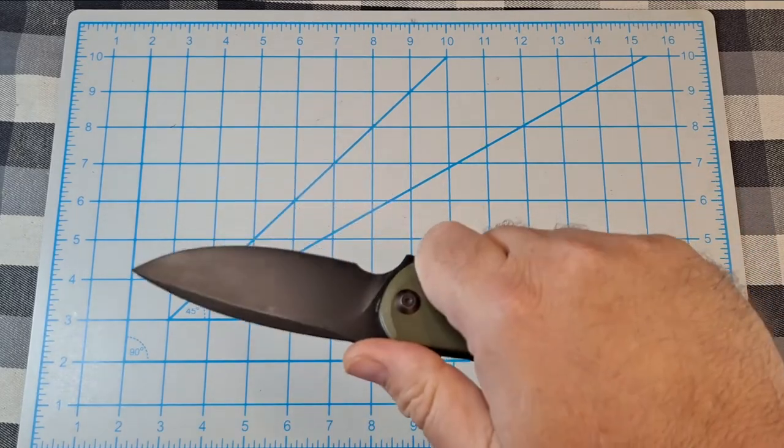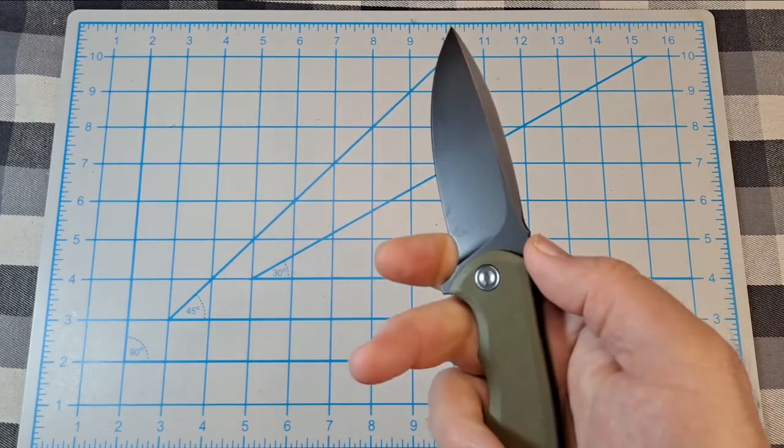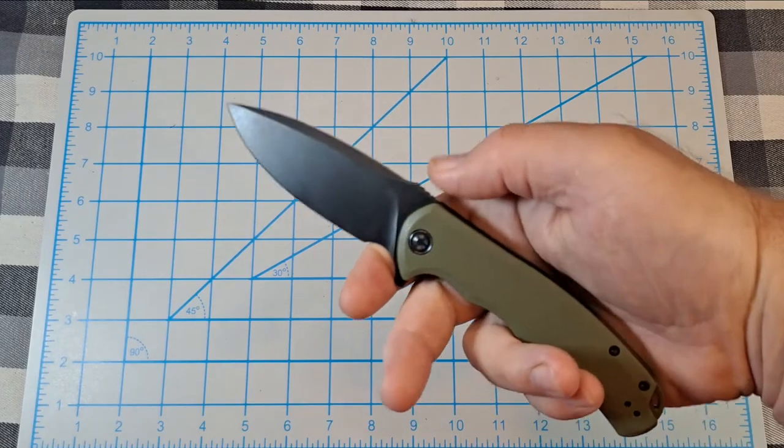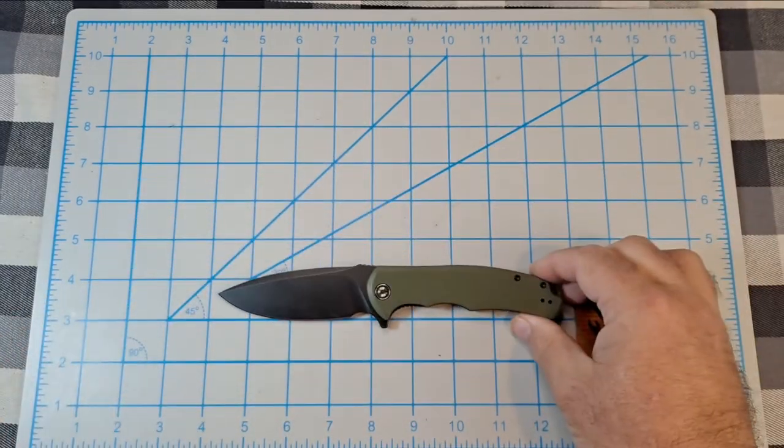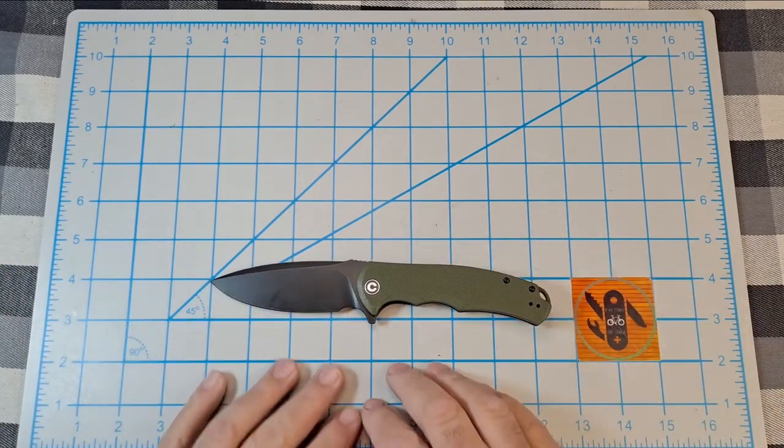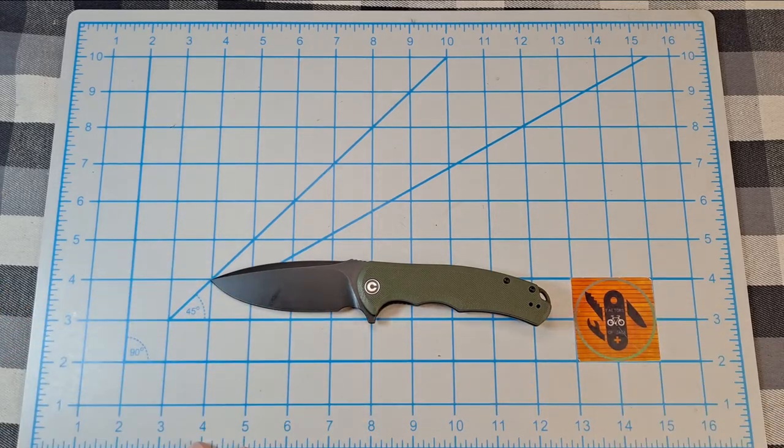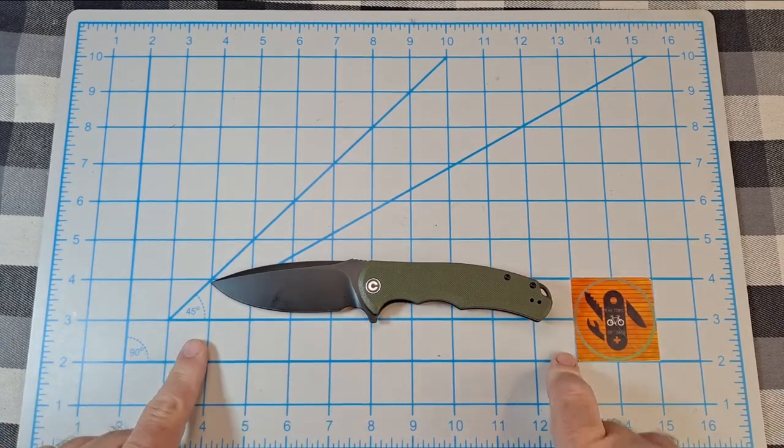It's nothing like 8cr13mov. I have quite a few 9crs, they work excellent. Edge retention's decent, easier to sharpen. It probably doesn't retain an edge as long as D2, but it's a whole lot easier to sharpen. Yeah, it's a Civivi Praxis, so there's a million videos out on this. I'll make this quick.